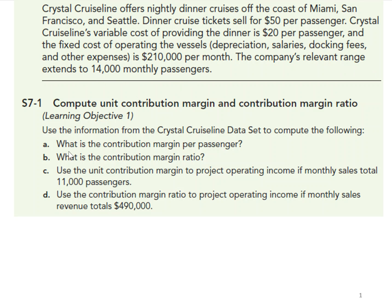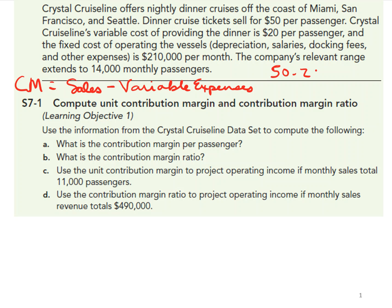First, we need to compute the contribution margin per passenger. Contribution margin is equal to sales minus variable expenses — it can be total sales revenue or per item. So we could say the contribution margin per passenger would be $50 minus $20, which is the variable cost, giving us $30 per passenger.